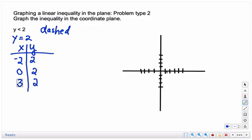Let's plot those points. When x is negative 2, y is positive 2. When x is 0, y is 2. When x is 3, y is 2.